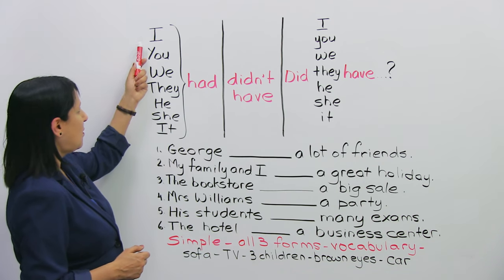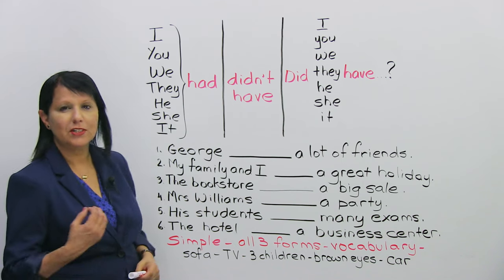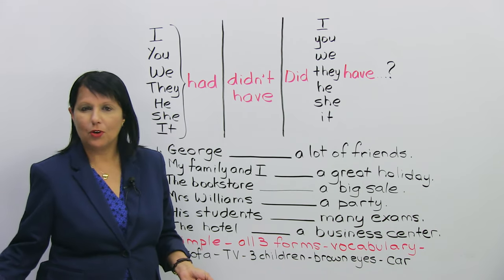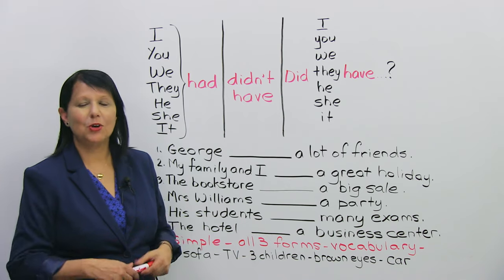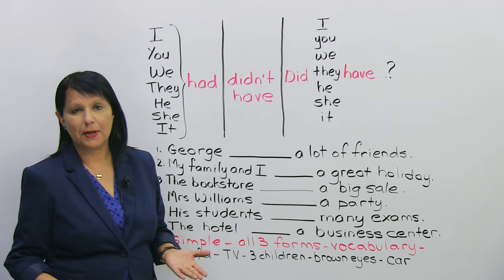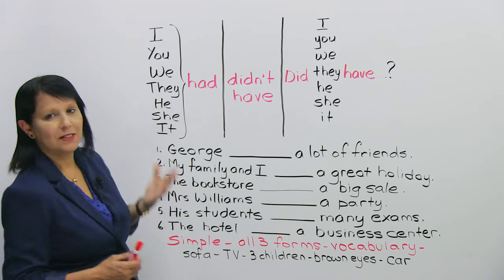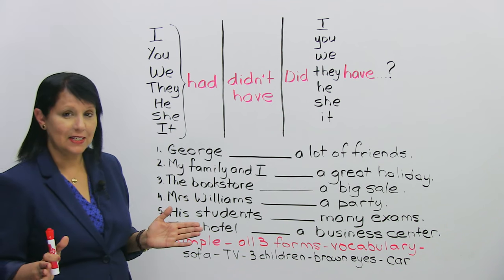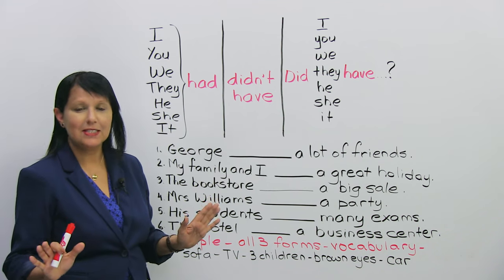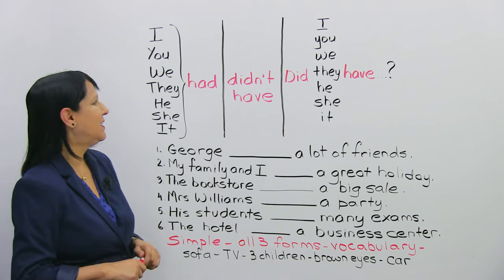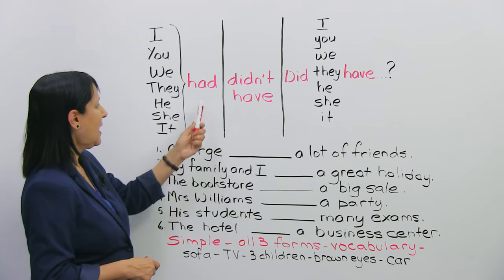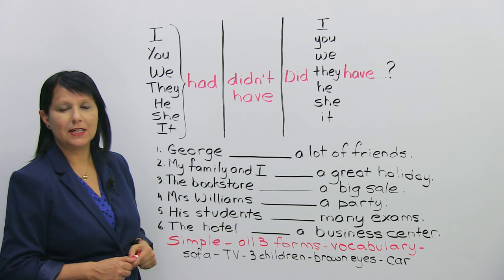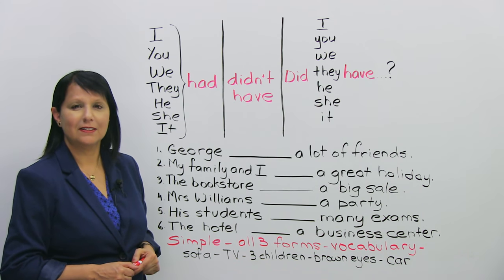Because with whatever subject we have, you have to use only one verb. You don't have to change the verb based on the subject. So, in the past tense, remember this is not the present tense, in the past tense, the verb to have becomes had. Okay? Say it after me. Had. Good.